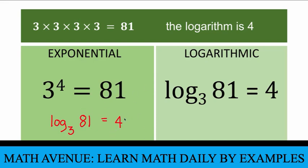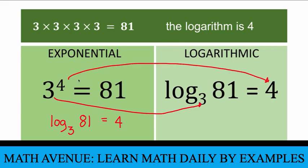Notice the relationship: the base 3 becomes the base of the logarithm, the exponent becomes the number that's isolated, and 81 — which is the power — becomes this number. So if you are just looking at the logarithm of 81 to the base 3 equals 4, you get base 3 and exponent 4 equal to 81, and you can convert back to its exponential form.